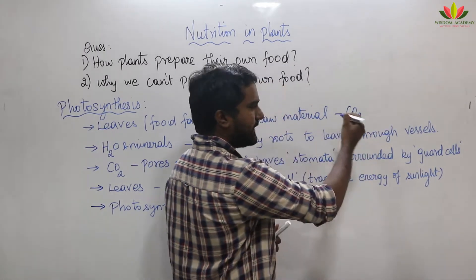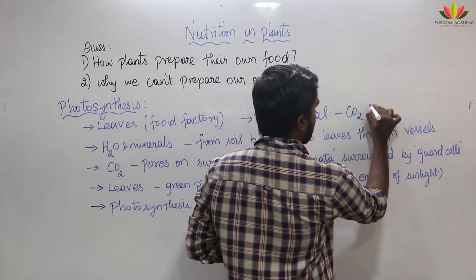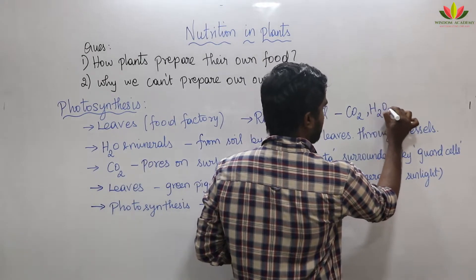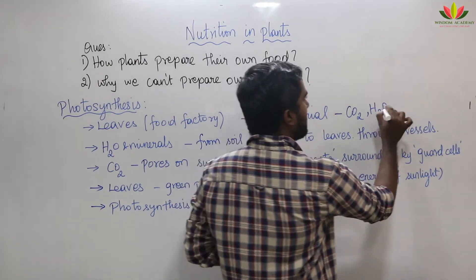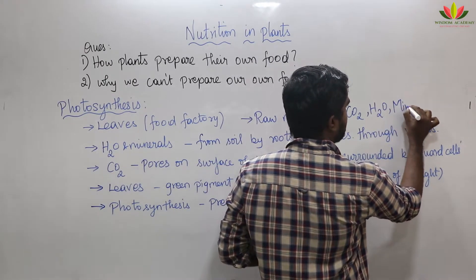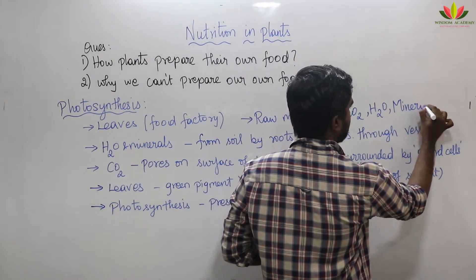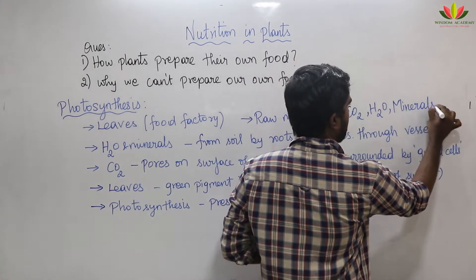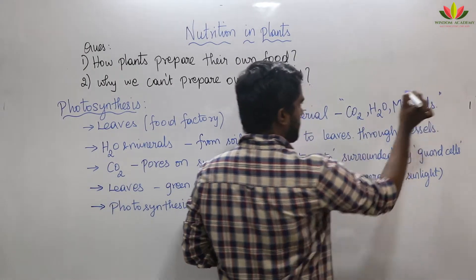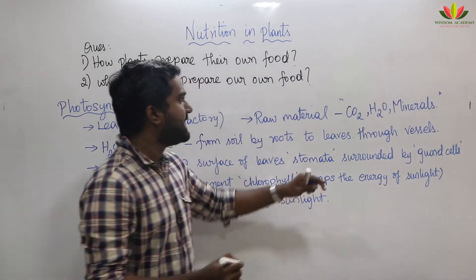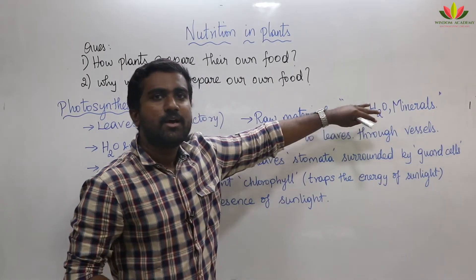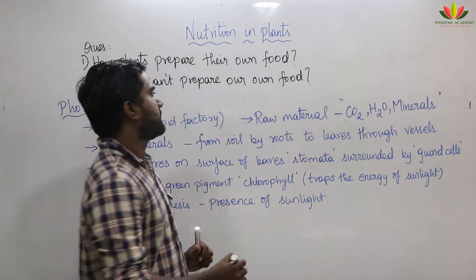The raw materials plants need to prepare food are: CO2, that is carbon dioxide; H2O, that is water; plus some minerals. These three are the raw materials they need for photosynthesis.